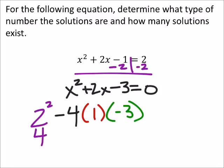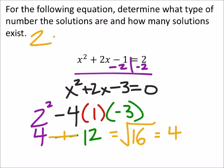2 squared is 4, so 4 minus 4 times 1 times negative 3 is negative 12. So we're going to end up adding those together.